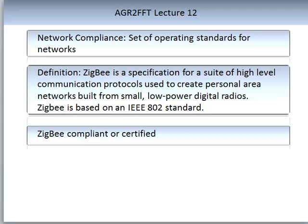One point of difference about this kind of communication is that the network may not have a centralized control or high-power transmitter-receiver able to reach all network devices. The decentralized nature of such a wireless ad hoc network makes them suitable for applications where a central node can't be relied upon. This can be very useful technology in an agricultural system.